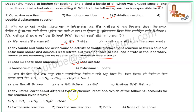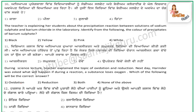The next question is: Imroz learned about different types of chemical reactions. Which of the following accounts for the reaction given below? Heat is released here — when heat is released, it is an exothermic reaction. The reaction produces precipitates of barium sulfate, and the color of barium sulfate precipitate will be white.